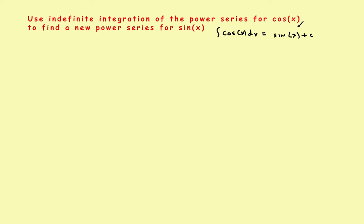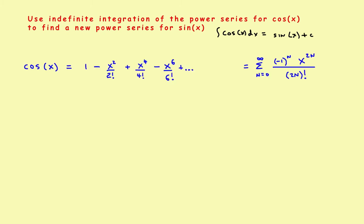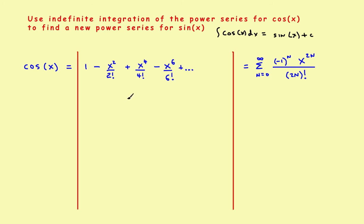To begin, we start by going to your tables and looking up the basic power series for the cosine. The cosine of x — which you should have seen before — is written in expanded form and in summation notation. Just like in the previous videos, we'll find the anti-derivative in both forms together by dividing things up into two columns: expanded form in one column and summation form in the other.